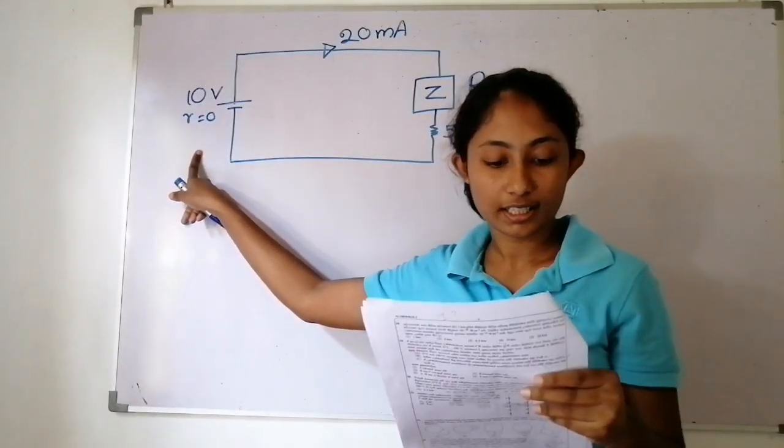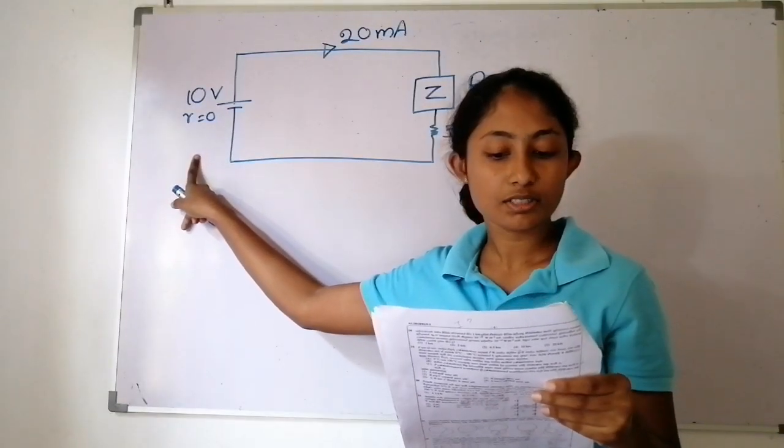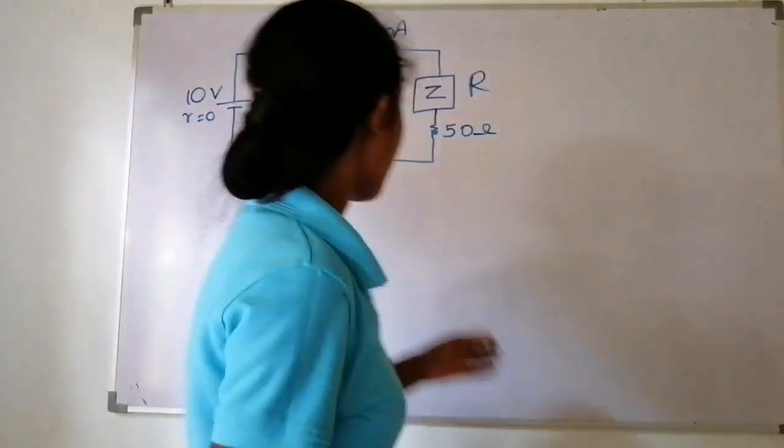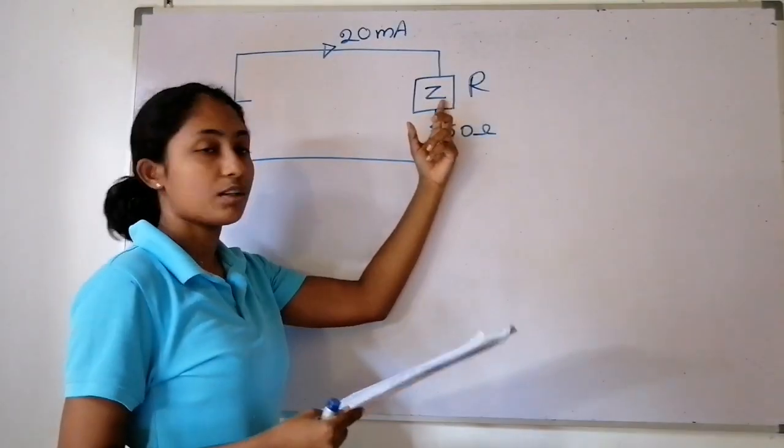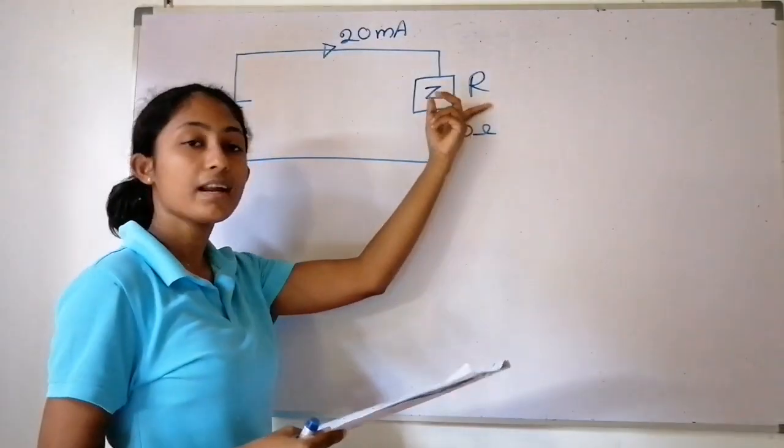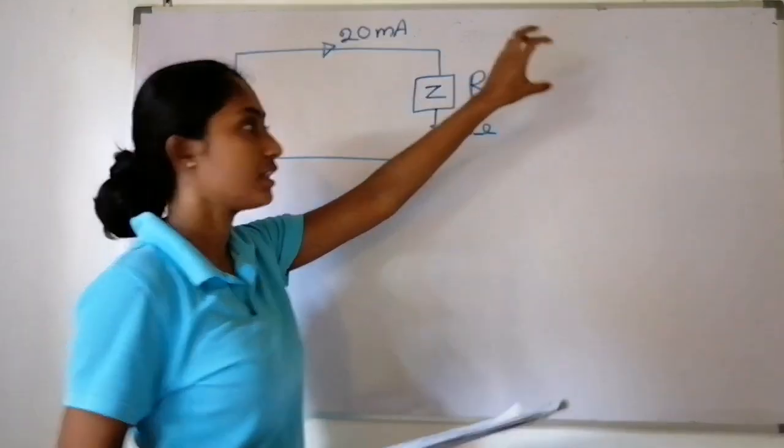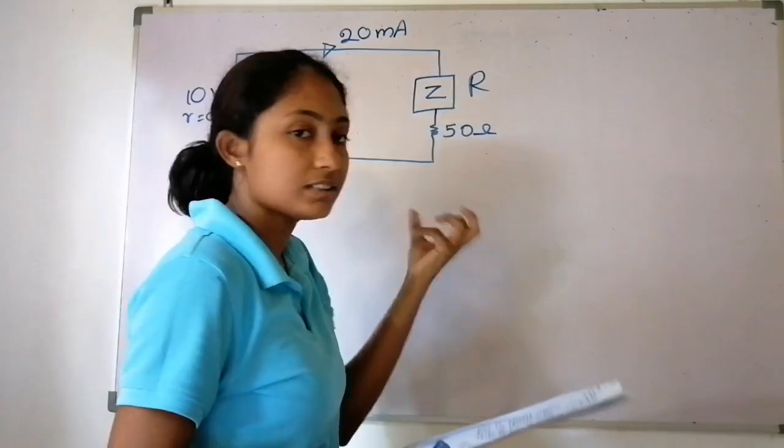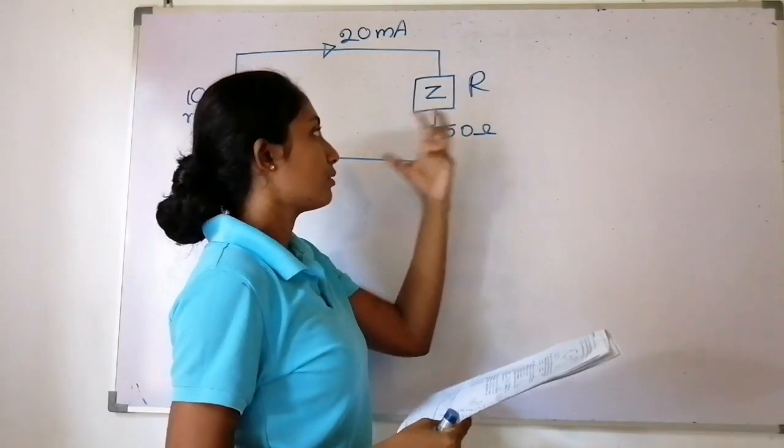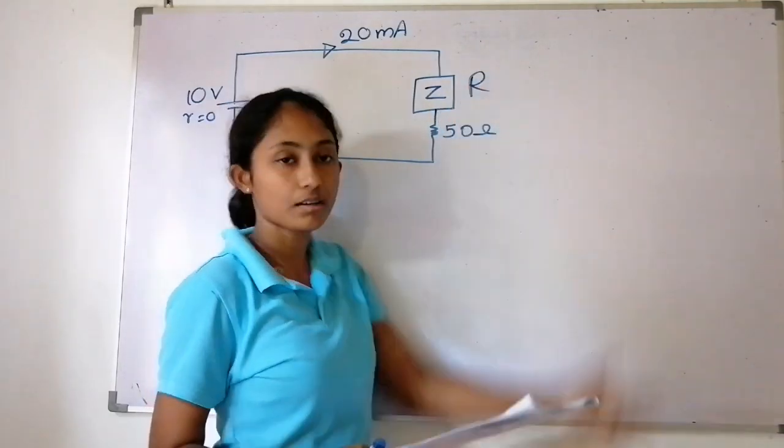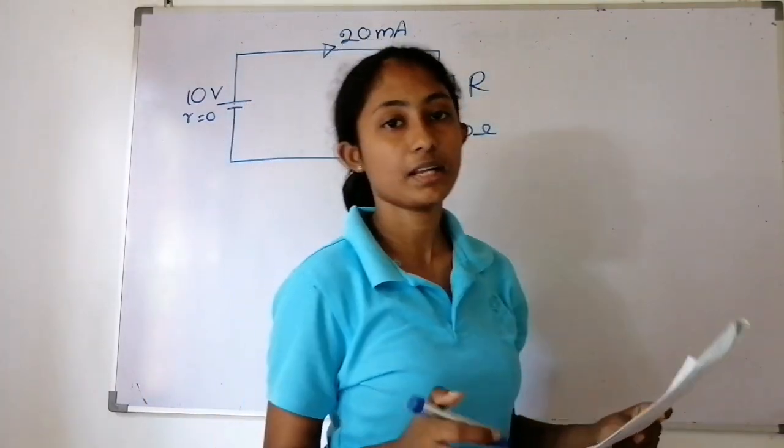Now if you want to find the capital R, the resistance value, we can calculate it using the given values. We'll use the formula to find R.